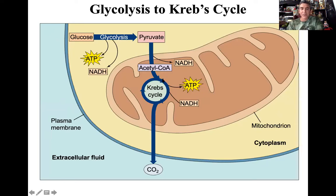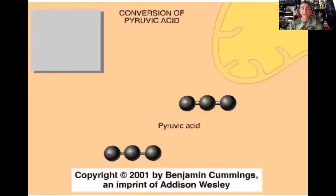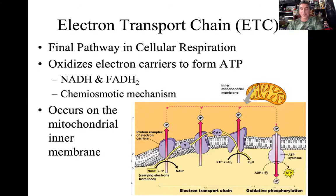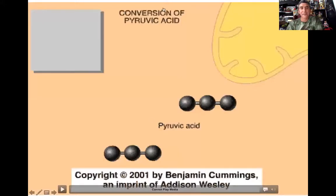To keep track of everything: deep in the mitochondrial matrix, the Krebs cycle generated six NADHs, two FADH2s, two ATPs by substrate-level phosphorylation, and four carbon dioxide waste molecules. That wraps up the second sub-pathway of cellular respiration. We're now ready for the last one.